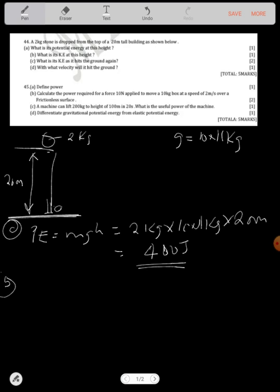This is what is its kinetic energy at this height? Now they're talking about this height when it's still here. If at this point it has got a potential energy of 400 joules, kinetic energy is going to be zero joules, because kinetic energy is not associated with height.